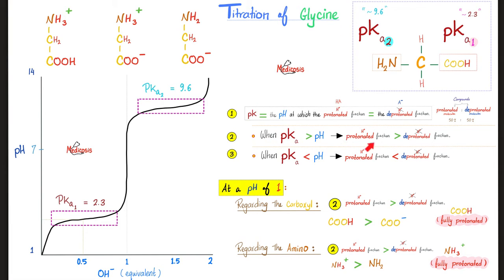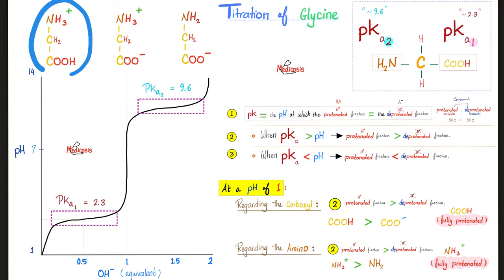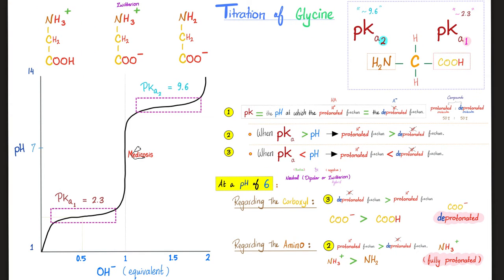Let's review: when pKa equals pH, both fractions are equal. When pKa is winning — i.e., pKa is greater than pH — the protonated form wins. At a pH of 1, which is lower than both pKa values, both groups favor the protonated form, so glycine exists fully protonated.